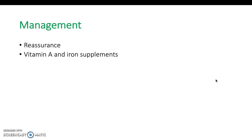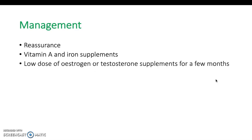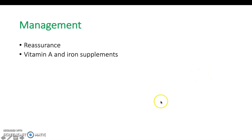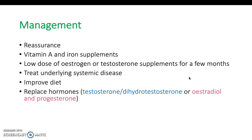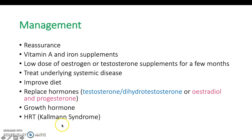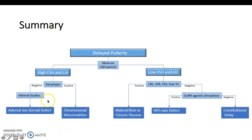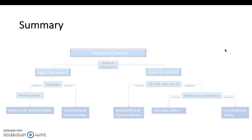For management, reassure parents if the delay is physiological and not harmful. Vitamin A and iron supplements may be given if the delay is severe or distressing. A low-dose oestrogen or testosterone supplement can be considered. For systemic disease, treat the underlying condition and improve diet. Hormones can be replaced, or growth hormone given. HRT is the treatment for Kallmann syndrome.